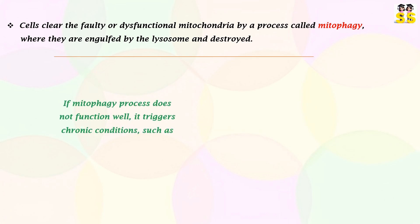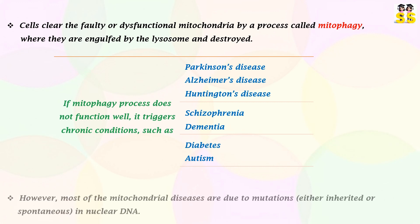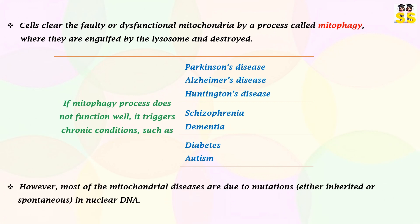If this process does not function well, it triggers chronic conditions like Parkinson's disease, Alzheimer's disease, Huntington's disease, schizophrenia, dementia, diabetes, and autism. However, most mitochondrial diseases are either due to inherited or spontaneous mutations in the nuclear DNA.